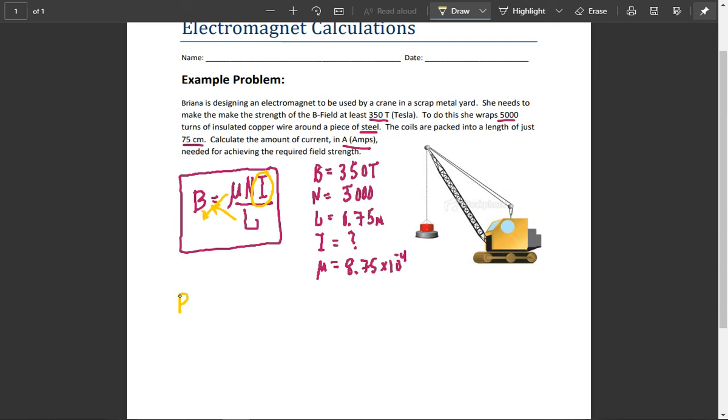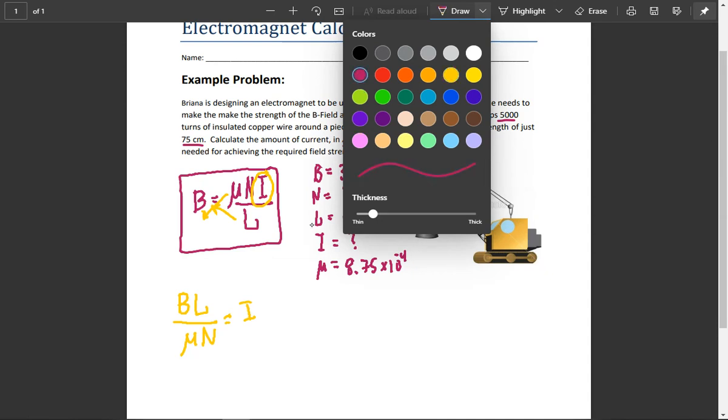So the rearranged formula would be B times L over μ N, which equals I.